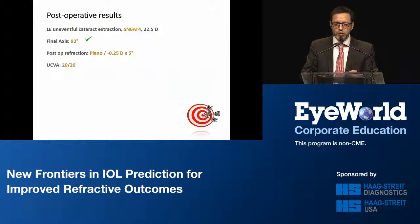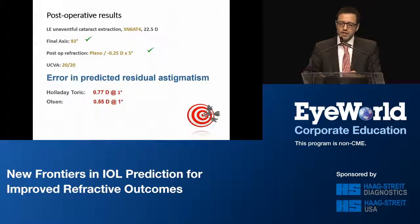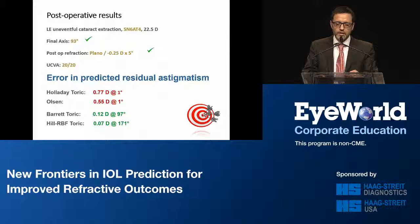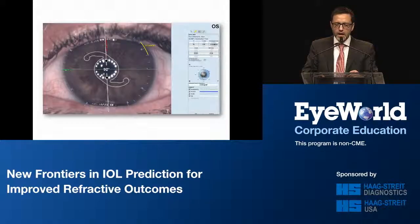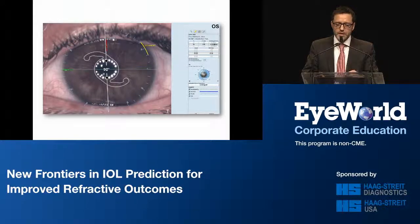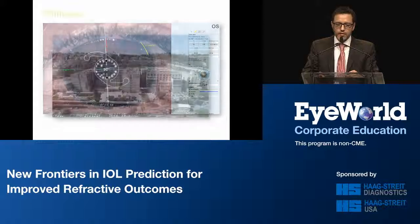Looking at the errors in predicted residual astigmatism, the Holladay toric calculator and the Olsen with the standard calculator yielded against-the-rule prediction errors which were quite high, whereas the Barrett and the Hill RBF toric calculator yielded minimal prediction errors. This is how it should look on the toric planner in the new LENSTAR software. Thank you very much.